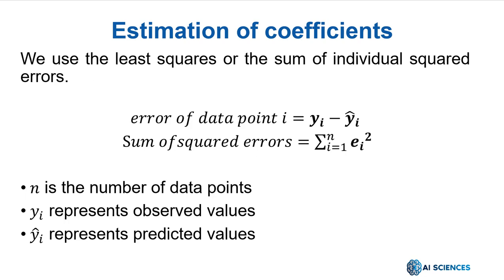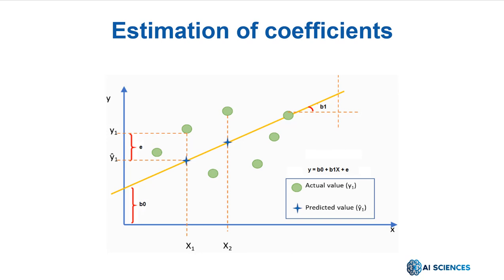Let's look at a graph to understand it better. In the graph, the green dots represent the true data and the yellow line is a linear model. The dotted red lines illustrate the errors between the predicted and the true values.